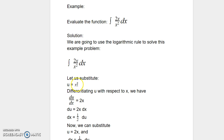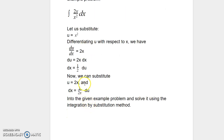du/dx is equal to 2x, since d/dx of x squared is 2 times x to the power 2 minus 1, which translates to 2x. We can rewrite this as du equals 2x dx. If we want to express this in terms of dx, we can write dx equals 1 over 2x du.